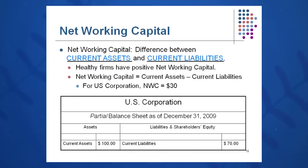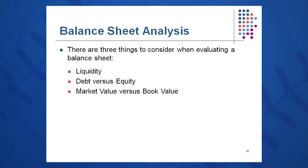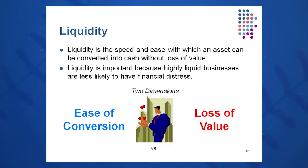Net working capital is the difference between current assets and current liabilities — you want more current assets than current liabilities to pay your bills promptly. When evaluating a balance sheet, put on three sets of goggles: first, liquidity goggles. Liquidity is the speed and ease with which you can turn an asset into cash without a loss of value. The more liquid a company, the less likely it is to face financial distress.